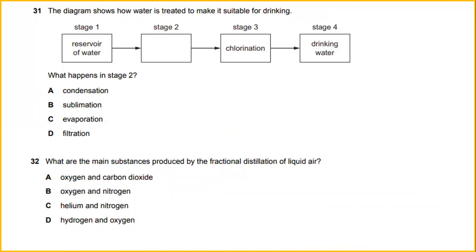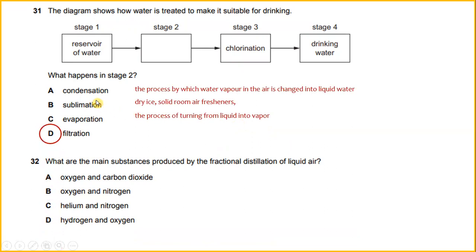Number 31. The diagram shows how water is treated to make it suitable for drinking. Stage two is filtration, followed by chlorination, to produce drinking water. So the most suitable answer for number 31 is filtration.